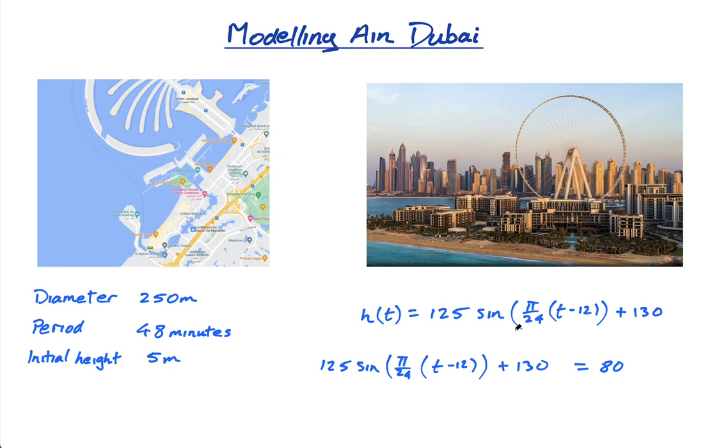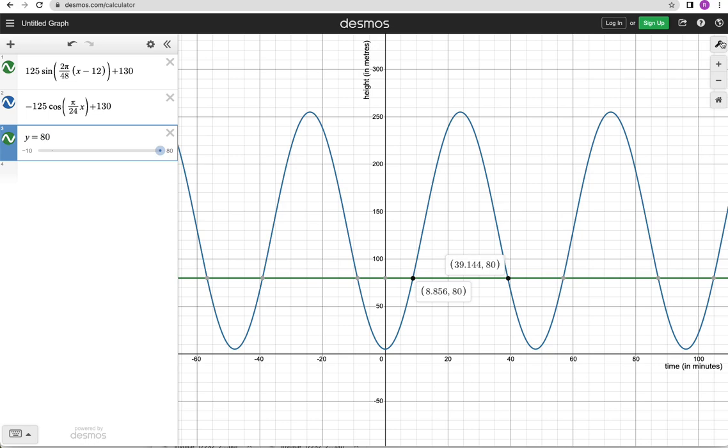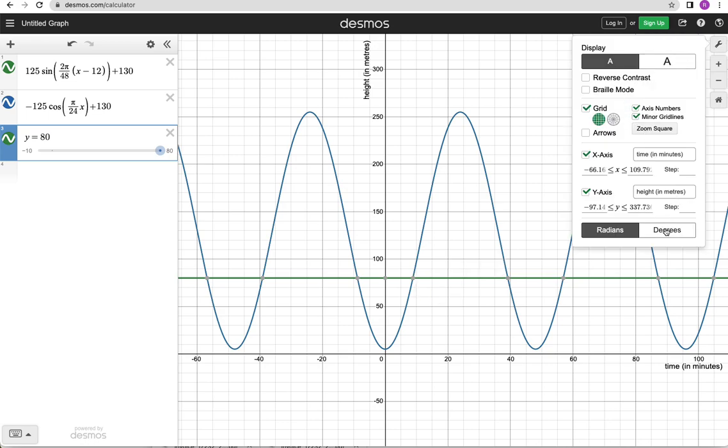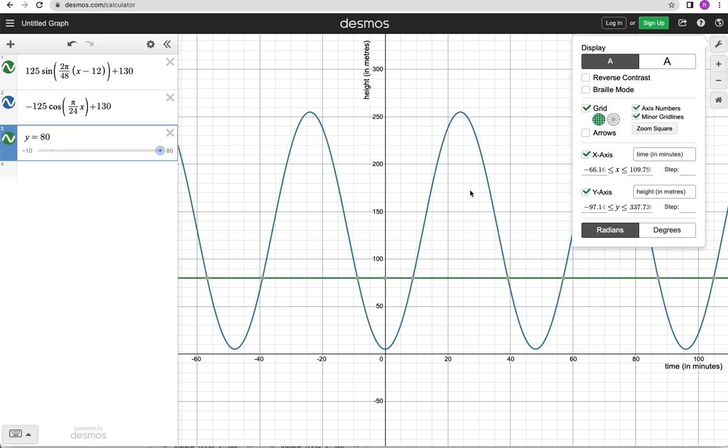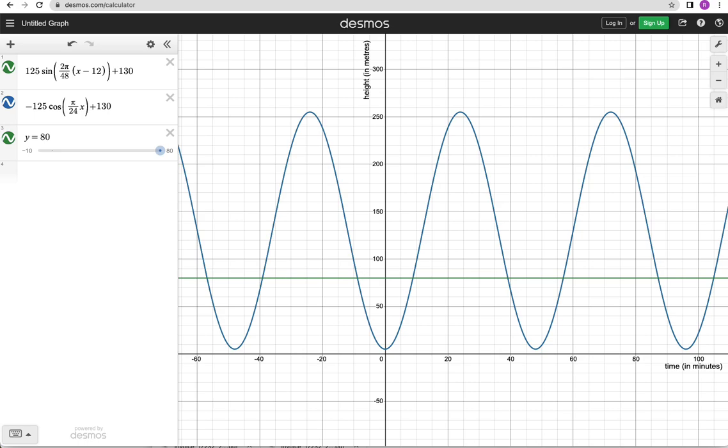Which course is this appropriate for? Analysis standard level would be the definite one for sure. You could do it in application standard level as well - the only thing I'd say is I'm using radians here. In applications you should use degrees because there is no radians in your course, but it's basically the same concept. If you want to use degrees you just change it here into degrees - obviously you have to work these things out differently. I'll just keep it in radians for the time being.